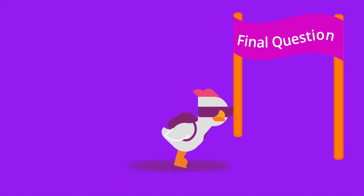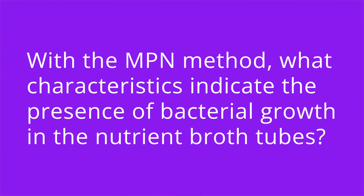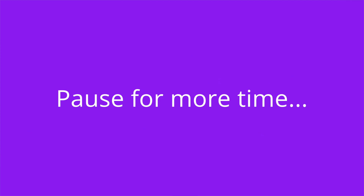Question number four: with the MPN method, what characteristics indicate the presence of bacterial growth in the nutrient broth tubes? The answer is a change in color, a change in turbidity, or the presence of gas in the tube.